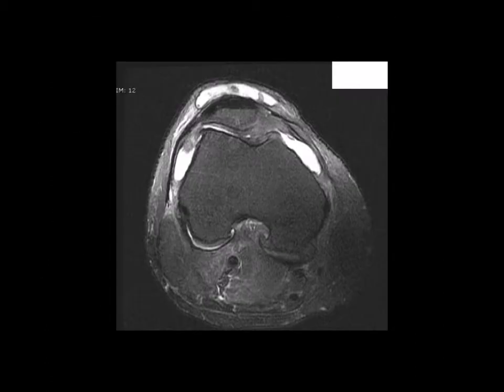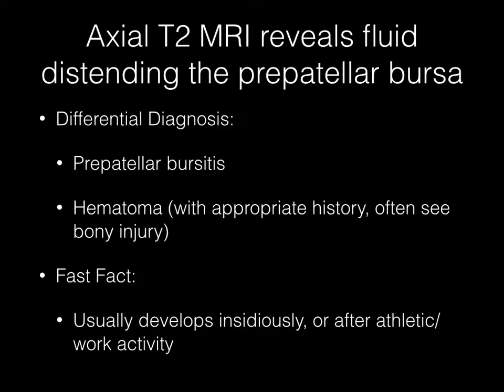Now pause your media player. This axial T2-weighted MR image reveals fluid distending the prepatellar bursa. The differential diagnosis should include prepatellar bursitis, as well as potentially hematoma, although an appropriate history would be necessary, and with hematoma you would often see an associated bony injury.